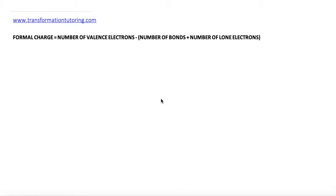Formal charge is the charge of an atom in a molecule. It is equal to the number of valence electrons minus number of bonds plus number of lone electrons. Where do we take these numbers from?